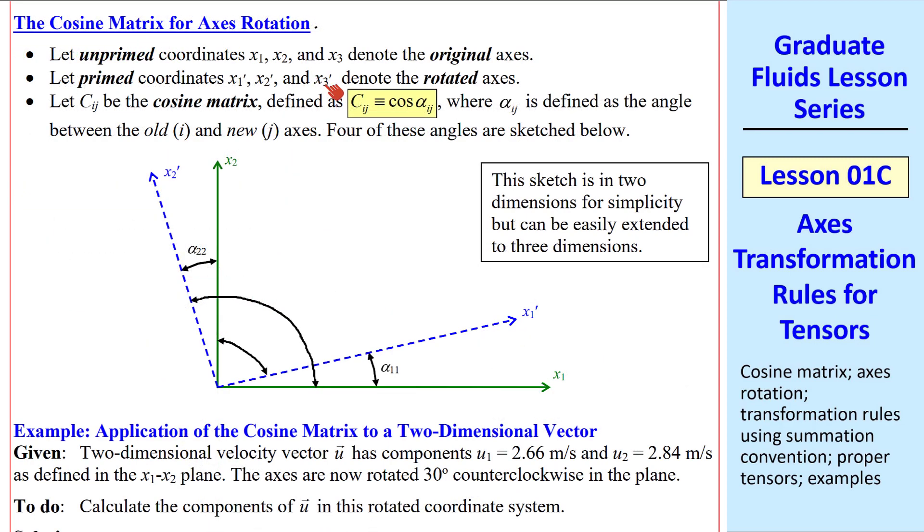First, we'll define a cosine matrix. Here it is in tensor notation: Cij is cosine alpha_ij, where alpha_ij is the angle between the old i and the new j axes. So i is old and j is new. In this notation, unprimed coordinates x1, x2, and x3 are the original axes, and primed coordinates are the rotated axes.